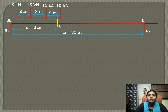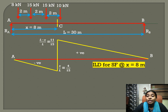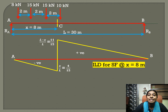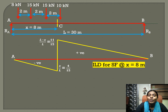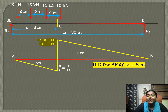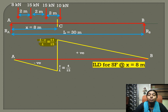For this problem, we will draw the influence line diagram for shear force. The influence line diagram for shear force at a section for a simply supported beam has a positive ordinate and a negative ordinate. The positive ordinate is (L minus X) by L. Substituting L = 30 and X = 8, we get the positive ordinate as 11 by 15 and the negative ordinate as 4 by 15.